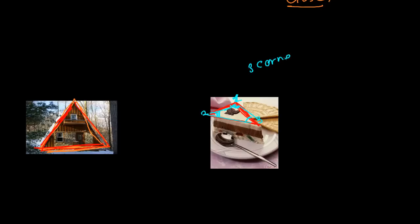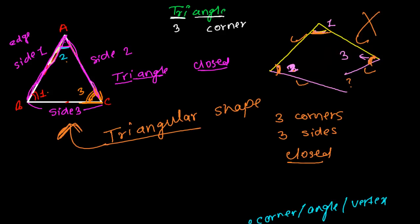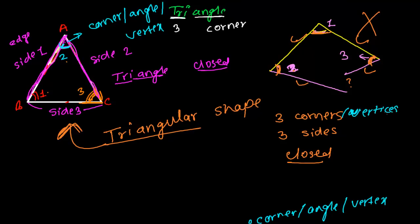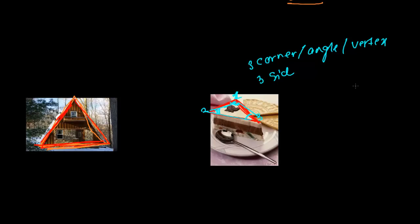So altogether we have three corners, three sides, and three angles. Some people say corners, some say angles, and some even say vertex — or vertices, which is the plural of vertex. Three vertices, three sides — these are the main basic requirements for a shape to be a triangle in geometry.